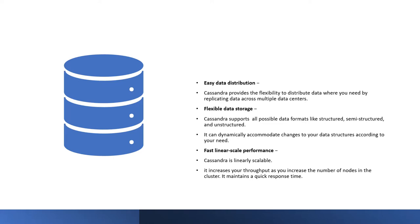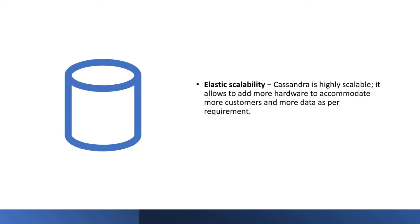A most important feature is fast linear scale performance. Cassandra can be linearly scalable — it increases throughput as you add more nodes to the cluster while maintaining quick response times. Cassandra's elastic scalability is very important: it is highly scalable and allows you to add hardware, so more nodes give you better throughput and availability.